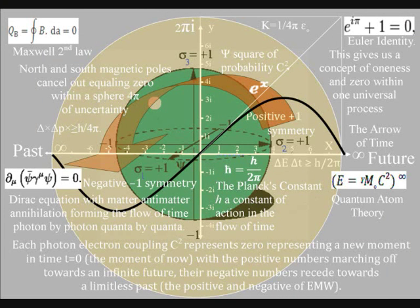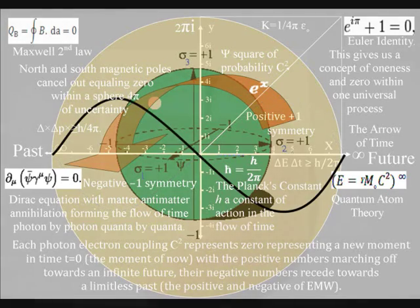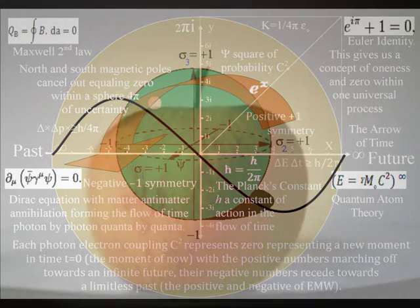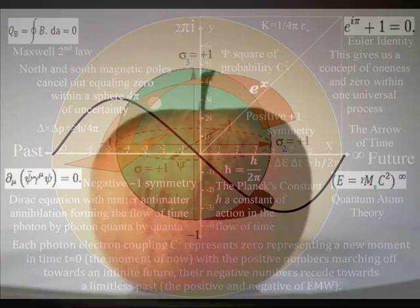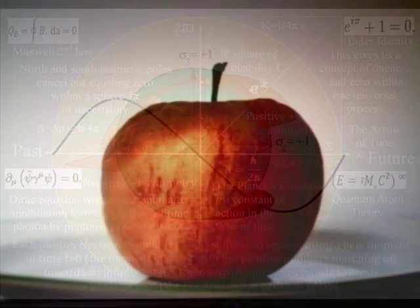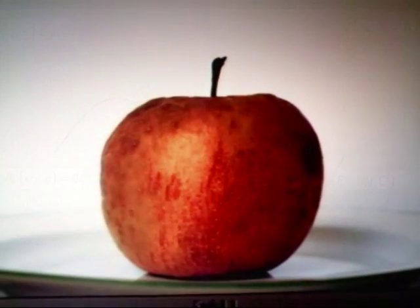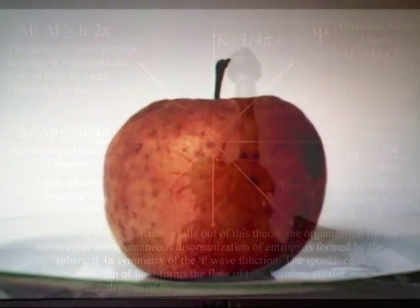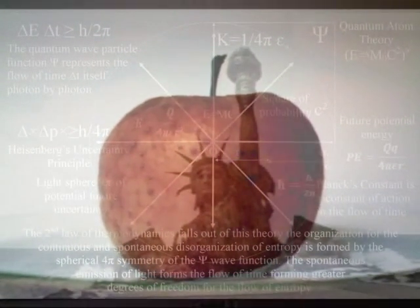This theory predicts that this spherical symmetry, or organization, forms the low entropy that creates the possibility for the continuous increase in entropy, or disorganization, that we have in the second law of thermodynamics, as time unfolds, photon by photon.